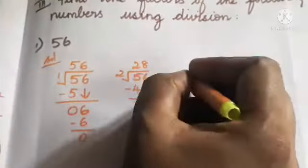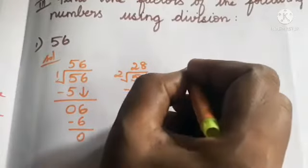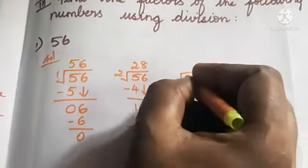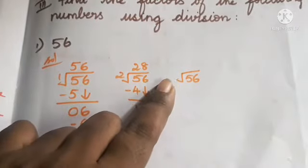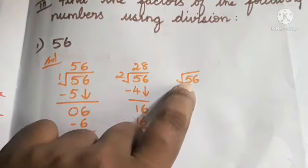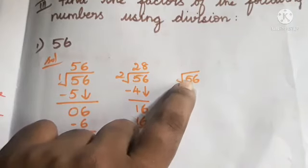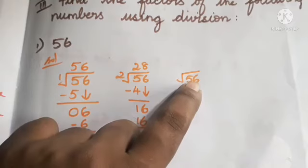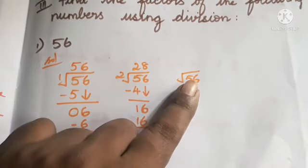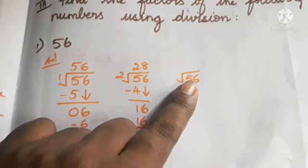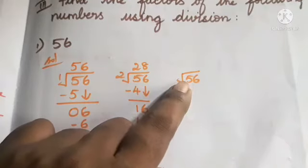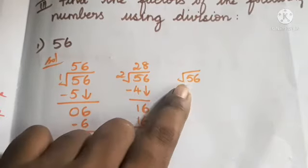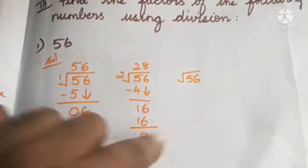Next, divide 56 by 3. One 3 is 3; in the tens place we get a remainder of 2. Bringing down 6 gives 26. How many 3s are in 26? Eight 3s are 24, giving remainder 2. Since we don't get remainder 0, we cannot take 3 as a factor of 56.